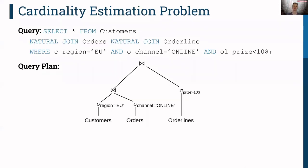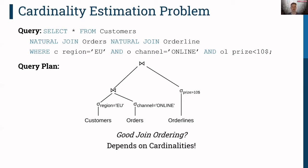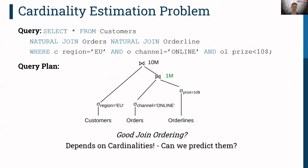Let me quickly recap cardinality estimation. We are given a query with certain join and filter predicates, and then we come up with a query plan — for instance, first joining customers and orders, then order lines. We might ask: is this a good join ordering? Should we first join orders and order lines instead? This depends on the intermediate cardinality. The intermediate cardinality of customers and orders might be five million tuples, whereas joining orders and order lines first yields just one million tuples — a much better plan. The task is to predict such intermediate cardinalities before we actually execute the plan.